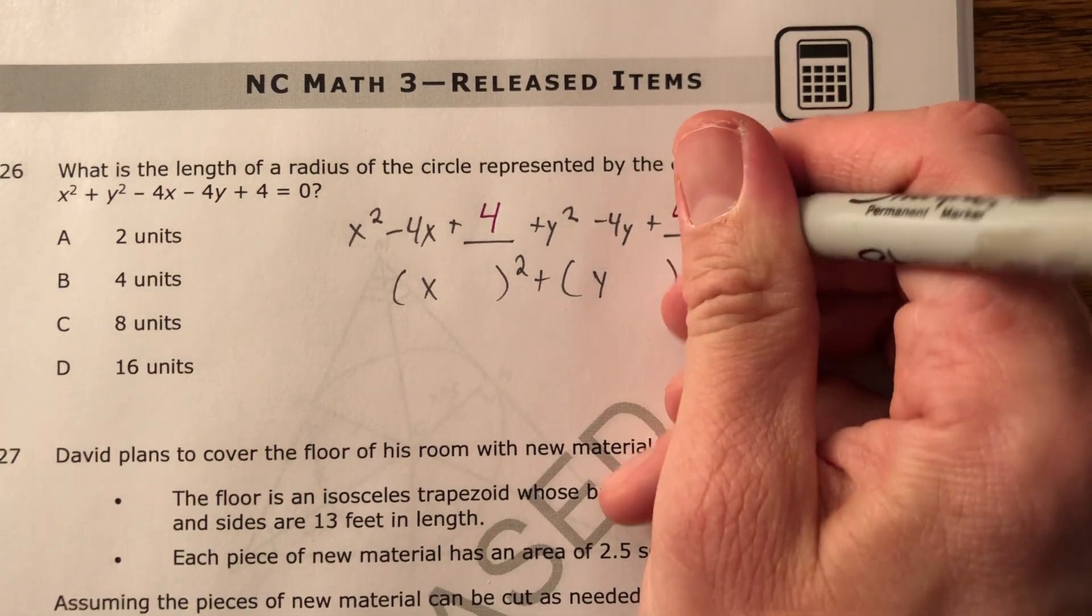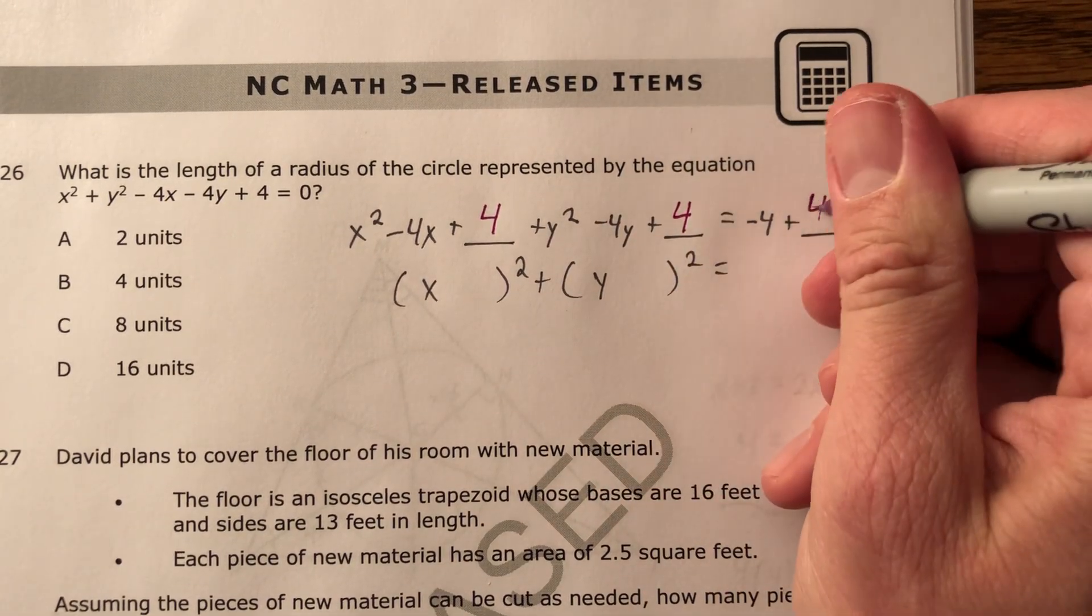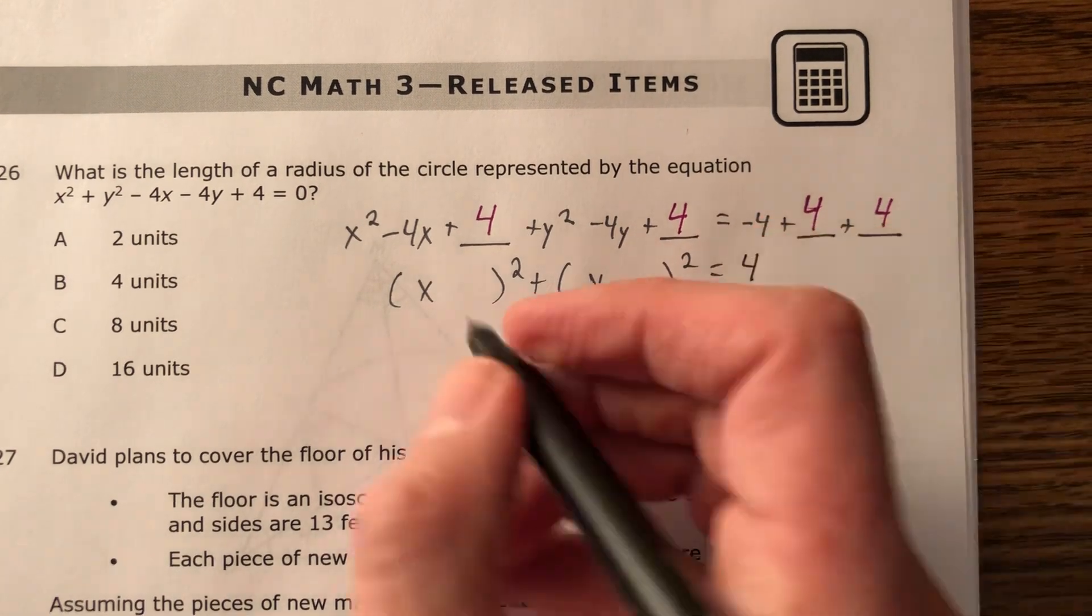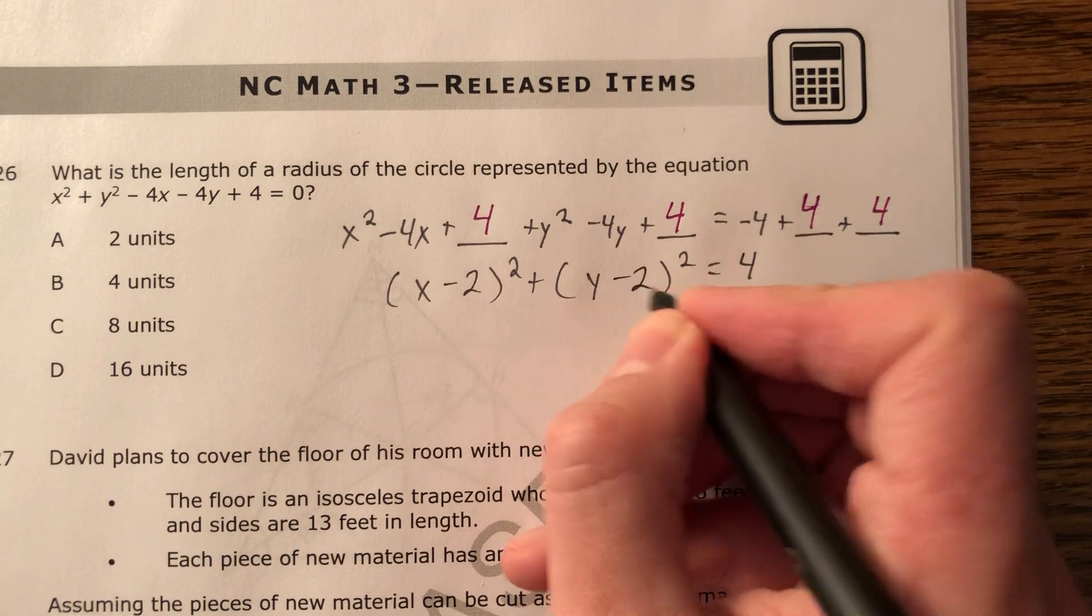Same here. You better work, marker. There we go. On the right side of the equation I get a 4. Over here I have x minus 2 and y minus 2.